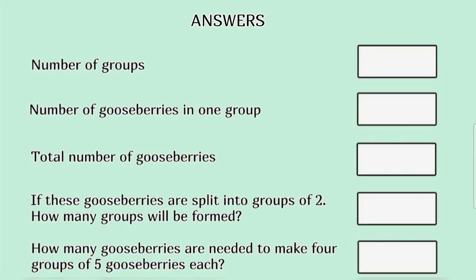How many gooseberries are needed to make 4 groups of 5 gooseberries each? Answers. Number of groups, number of gooseberries in one group, total number of gooseberries 16. If these gooseberries are split into groups of 2, how many groups will be formed? 16 divided by 2 is equal to 8. How many gooseberries are needed to make 4 groups of 5 gooseberries each? 4 into 5 is equal to 20.